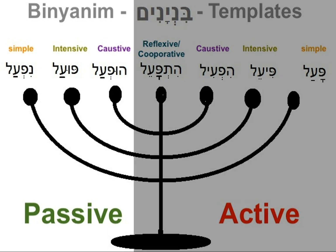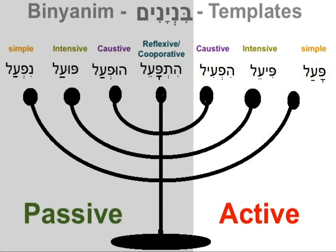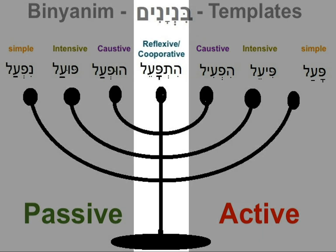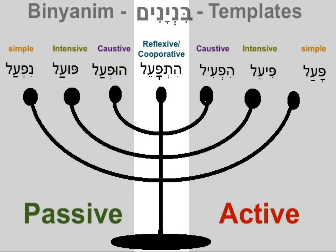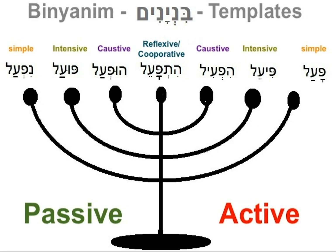We have three passive templates, three active ones, and a reflexive one. We will talk about each and every one of these templates — Binyanim — in a separate lecture. Each Binyan has a certain pattern of conjugation, and verbs in the same Binyan are conjugated similarly. When a Shoresh follows that pattern, its action will change, but its basic meaning will be retained. You will see an example shortly.